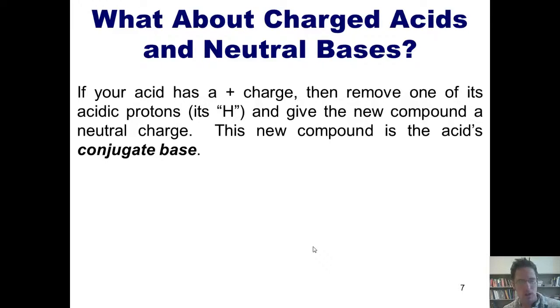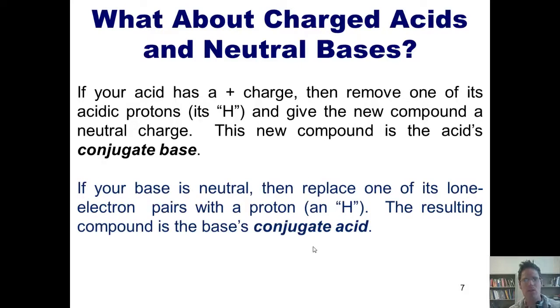Similarly, I've also told you that if you replace a base's minus charge with an H, then you're going backwards to making its conjugate acid. But what if your base doesn't have a minus charge? What if it starts out being neutral? Well, if your base is neutral, then what you do is you replace one of its lone electron pairs with a proton or an H,